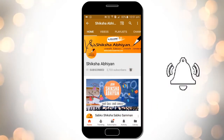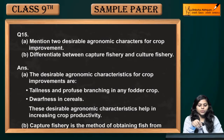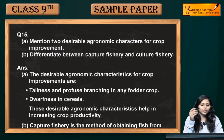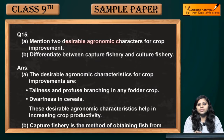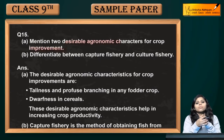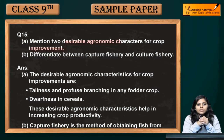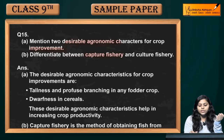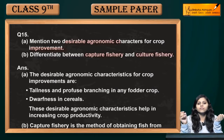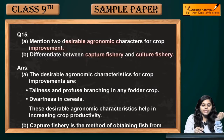Now coming to question number 15, do parts. First one is: mention two desirable agronomic characteristics for crop improvement. Crop improvement ke liye hamay do agronomic characteristics. Second is: differentiate between capture fishery and culture fishery.